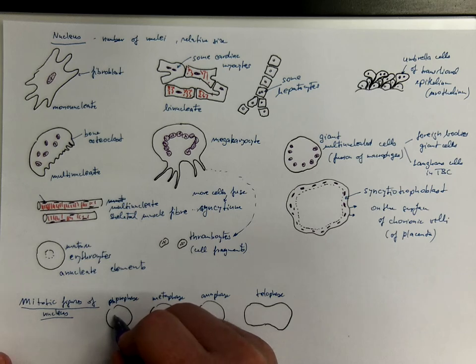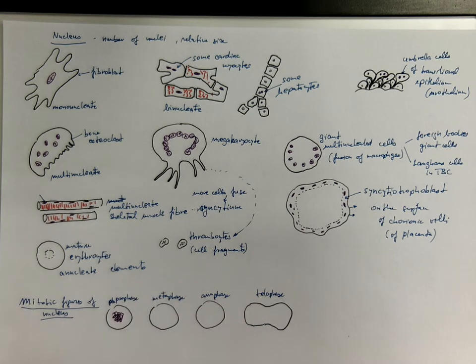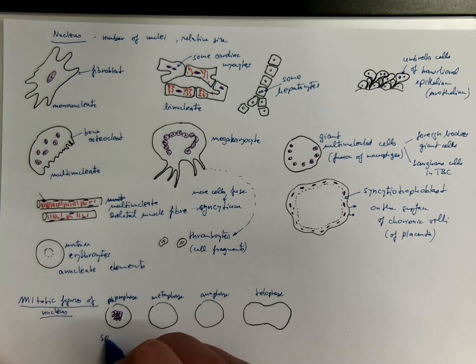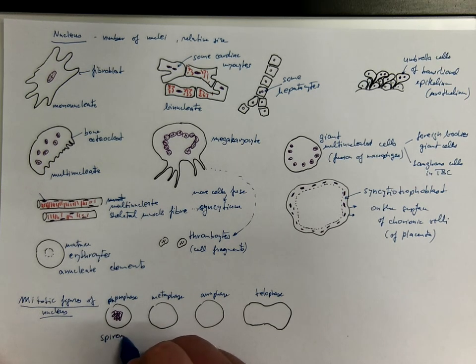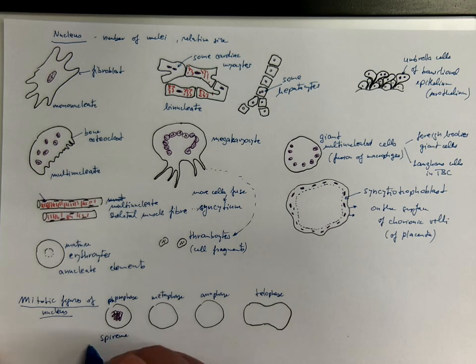And in prophase, when the nuclear membrane dissolves and the nucleolus dissolves, you can often see a spiralized body of chromosomes. It's called the spireme, or spiral-like chromosomes.